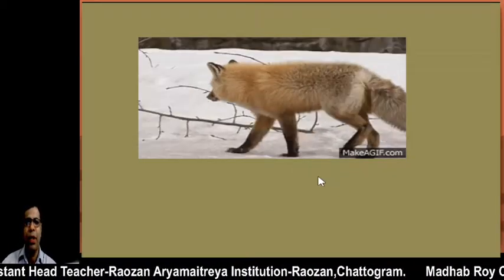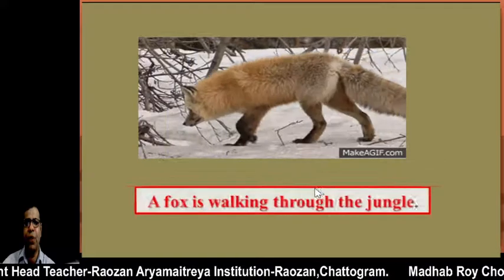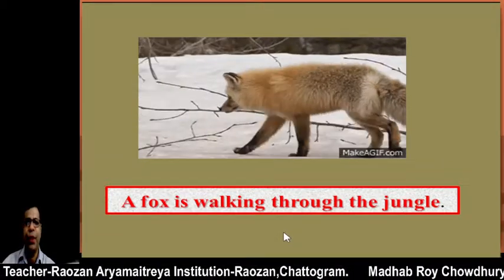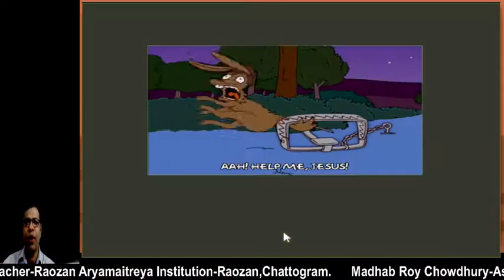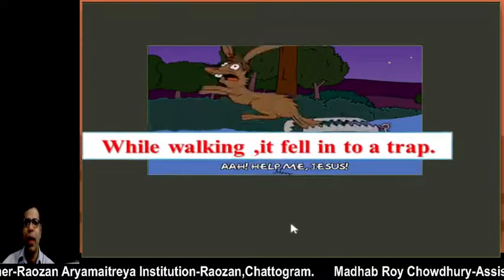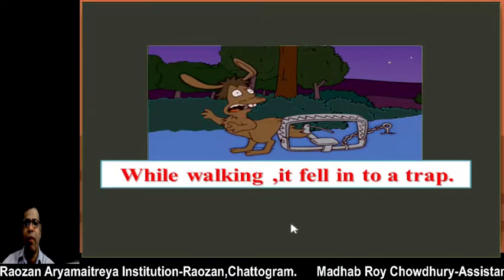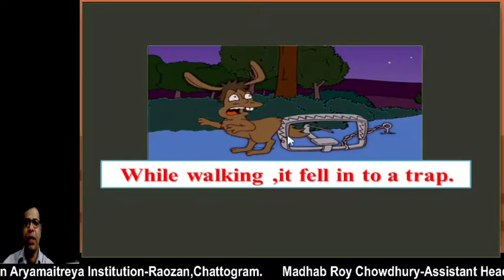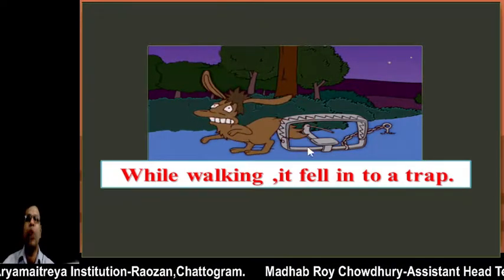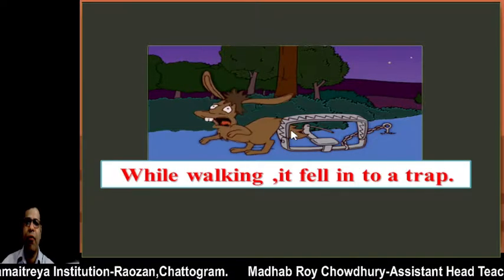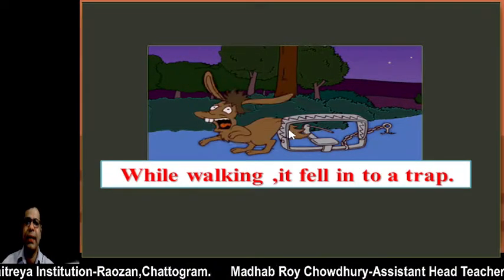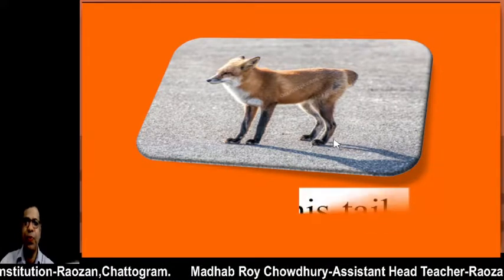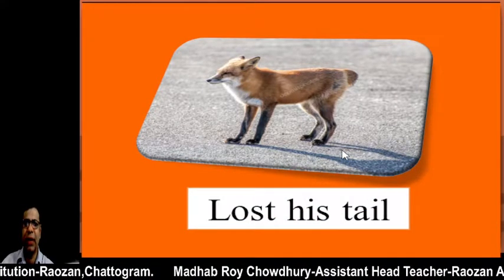Now look at the picture. The fox is walking in a forest-like area. Can you see what he is looking for? While walking, he fell into a trap. This is a cartoon-like picture. The fox fell into the trap and its tail got stuck in it. So now the fox has lost its tail.